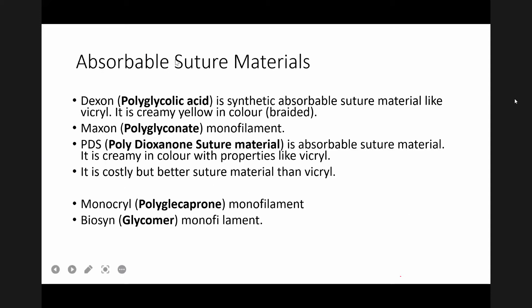Other absorbable sutures include polyglycolic acid, a synthetic absorbable suture material that is creamy yellow and braided. Similarly, polyglyconate, known as Maxon, is an absorbable but monofilament suture. When to use absorbable or non-absorbable, and either monofilament or multifilament, depends upon the tissue we are applying and repairing.